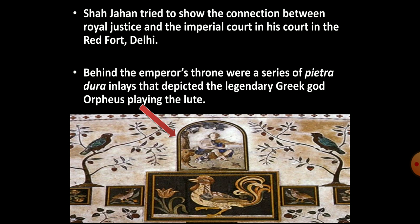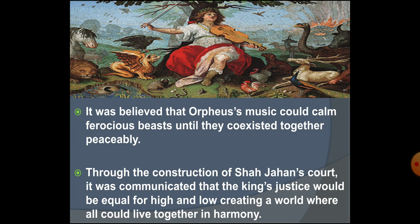As you can see in this picture, the series of Pietra Dura inlays showed the mythical Greek god Orpheus playing a stringed instrument called the lute. There was a belief that the music of the Greek god Orpheus could make even the most violent wild beasts calm, so they could coexist in a peaceful manner. Shah Jahan's audience hall was built to convey the message that the justice of the king would treat all people, high or low, as equals, creating a world where everyone could live together in harmony.